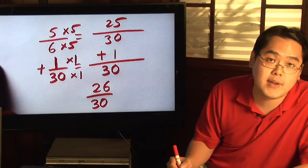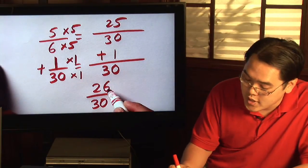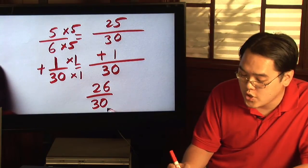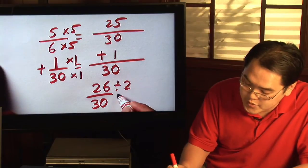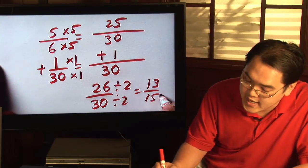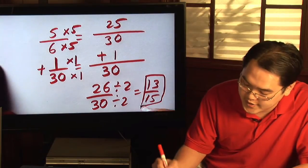After that, you may have to ask yourself, do I need to reduce? After looking at these two numbers, you see that two will go into twenty-six and thirty. So dividing both sides by two, you will get thirteen over fifteen. And that is going to be your final answer.